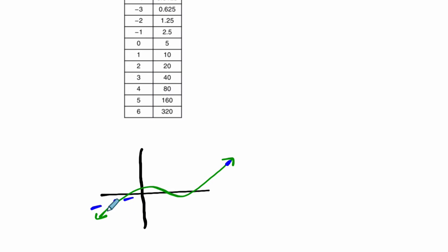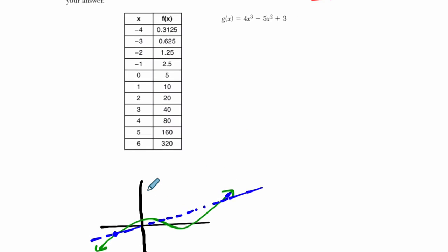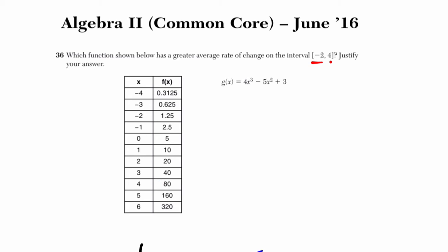Well, the average rate of change finds the slope essentially between those two points, and then uses that slope to approximate what the actual average rate of change over that interval would be. The idea, the generic formula that we can use here is the difference of your outputs over the difference of your inputs, which is the formula for slope.